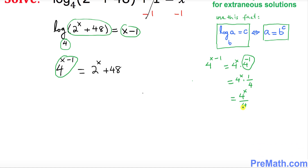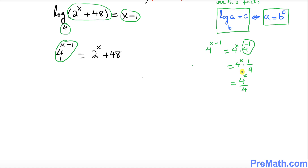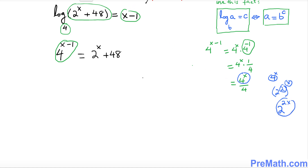Now looking at the numerator, 4^x — we can write 4 as 2², so 4^x becomes (2²)^x. Whenever you have two exponents, you multiply them, so this becomes 2^(2x).